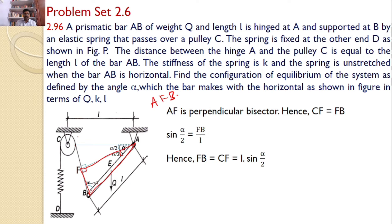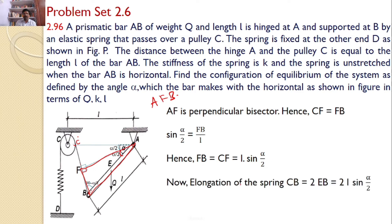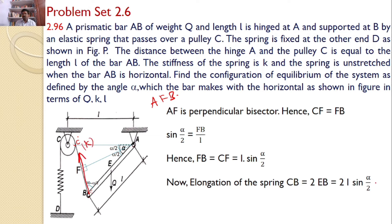FB equals CF, which equals L times sin(alpha/2). Hence, the total elongation of the spring is CB, which is two times FB — that is 2L sin(alpha/2). The spring is elongated by a distance of 2L sin(alpha/2). The spring force S equals stiffness times elongation: S = K × 2L × sin(alpha/2).